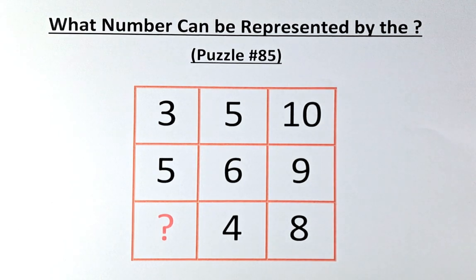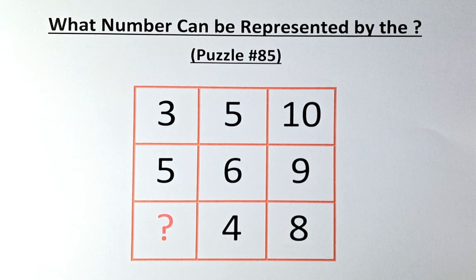Welcome back to the solution of puzzle number 85. The numbers in the puzzles are 3, 5, and 10 in the first row, 5, 6, and 9 in the second row, and a question mark, 4, and 8 in the final row. If you can solve this problem, well done because this is quite a tricky set of puzzles and here is the solution for those who have not solved it.